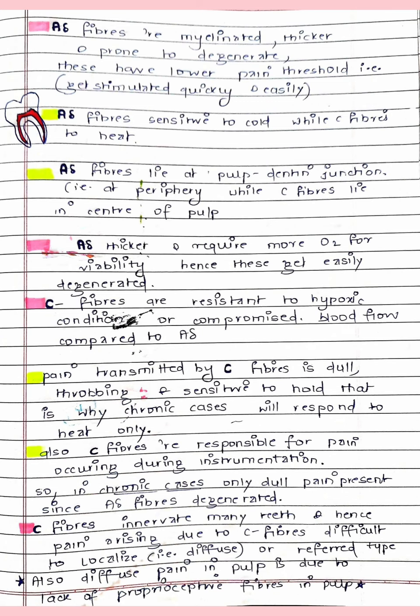A-delta fibers are myelinated, thicker, and prone to degenerate — they have a low pain threshold, are more sensitive than C fibers, get easily stimulated, and give a quick response. A-delta fibers are sensitive to cold, C fibers to heat. A-delta fibers lie at the pulp-dentine junction at the periphery, while C fibers lie in the center. Being thicker, A-delta fibers require more oxygen for viability, so they easily degenerate under hypoxic conditions — when oxygen levels are low. C fibers, on the contrary, are resistant to hypoxic conditions and can survive compromised blood flow.